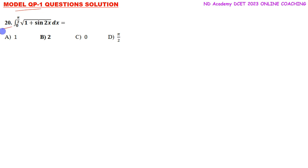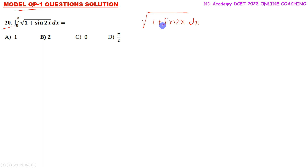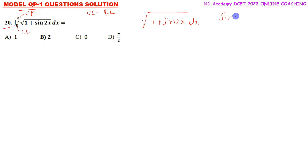Model question paper, fourth question: definite integral of square root of (1 plus sin 2x). This doesn't need integration by parts or substitution method. For definite integration, we apply the upper limit minus lower limit. We first simplify the expression inside the square root using a trigonometric identity.